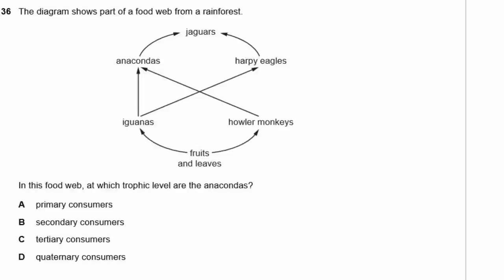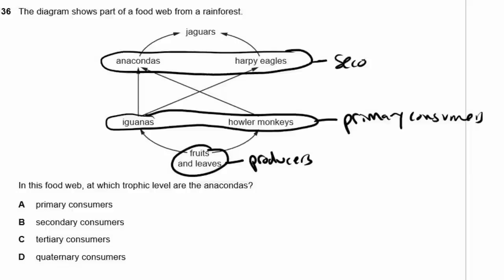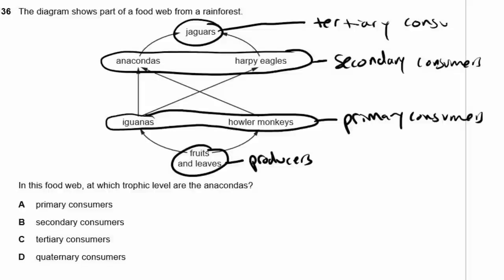Question 36: A food web from a rainforest — at which trophic level are the anacondas? Fruits and leaves are producers. Iguanas and howler monkeys eating producers are primary consumers. Things eating primary consumers are secondary consumers. Anacondas are at the secondary consumer level. The answer is B.